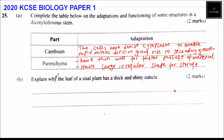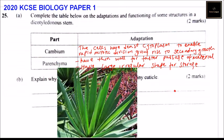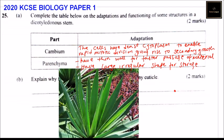Let's go to Part B of the question: explain why the leaf of a sisal plant has a thick and shiny cuticle. The thick cuticle enables it to conserve water, and the sisal plant mostly grows in dry areas. The shiny cuticle reflects light.